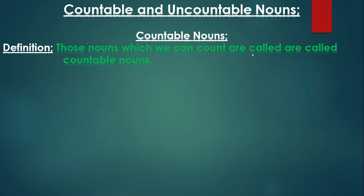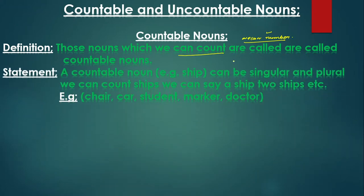Those nouns which we can count are called countable nouns. We can count them — we can number them. Those nouns which we can count are called countable nouns. Now let's move towards examples of countable nouns.